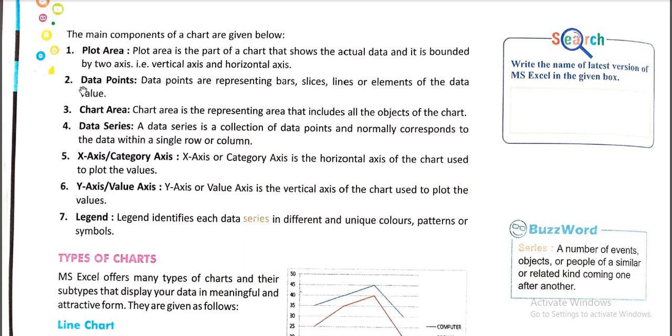Second point is data points. Data points are representing bars, slices, lines or elements of the data value. Third point is chart area. Chart area is the representing area that includes all the objects of the chart. Fourth point is data series. A data series is a collection of data points and normally corresponds to the data within a single row or column.